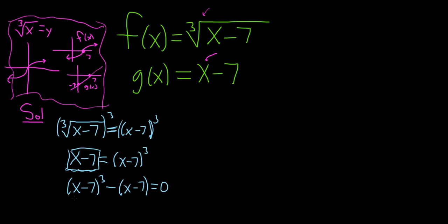The reason we did that is because now we can factor out an x minus 7. So: x minus 7, times (x minus 7) quantity squared, minus 1, equals 0. That's because x minus 7 to the 1 times x minus 7 to the 2 is x minus 7 to the 3, since we add the exponents. And then this is minus 1.